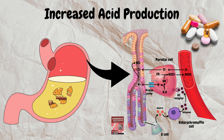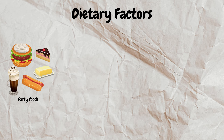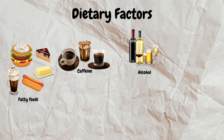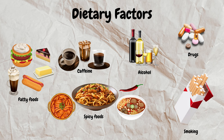This is why we prescribe gastric coverage such as proton pump inhibitors — for example omeprazole, esomeprazole, or pantoprazole — to block the proton pump, or H2 receptor blockers like cimetidine and ranitidine to decrease acid production. Certain dietary factors — fatty foods, caffeine, alcohol, and spicy foods — can trigger more acid production. Smoking is also responsible for increased acid production and ultimately leads to GERD.